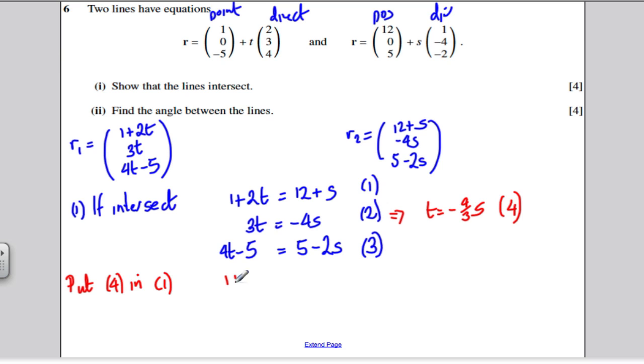So I would get 1 plus 2 lots of this, which would be minus 8 thirds S, is equal to 12 plus S. And adding 8 thirds S to both sides, and subtracting 12 from both sides, I'd get minus 11 would be equal to 1 plus 8 thirds S, which would be 11 thirds S, and that would give me that S would be equal to minus 3. And then subbing it back into the top equation there, that would give me that T, therefore, if S was minus 3, minus 4 thirds times minus 3, it would give me T is equal to 4.